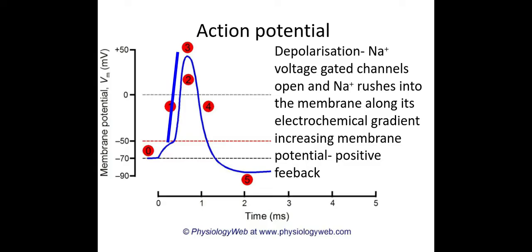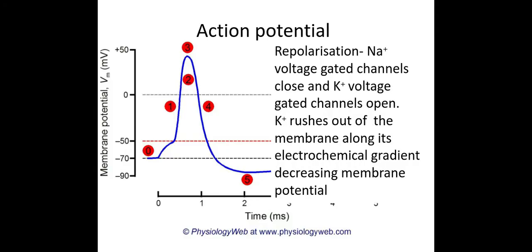At number three at the top, at the peak of the graph, the sodium voltage-gated channels close and the next part of the action potential occurs — this is called repolarisation, where the graph slopes downwards. At this point the sodium voltage-gated channels are closing, but the potassium voltage-gated channels are opening. Because there is a high concentration of potassium inside the neuron, potassium rushes out of the membrane along its electrochemical gradient, decreasing the membrane potential as positive ions move out.